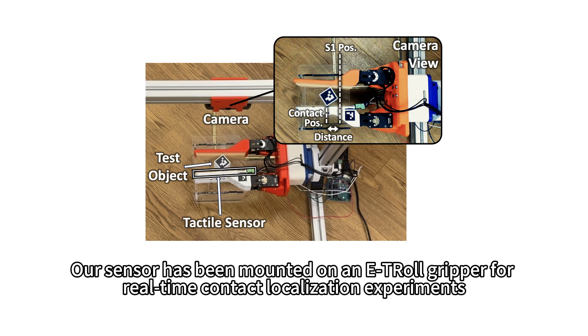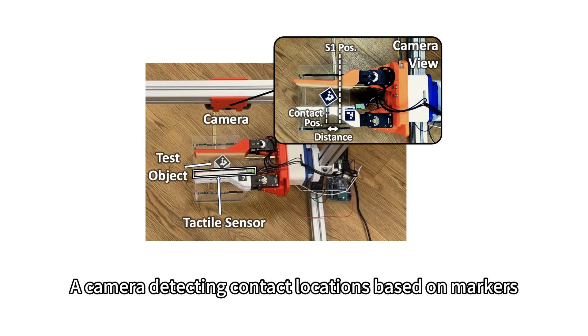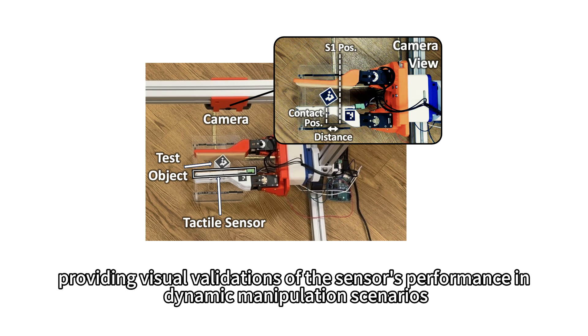Our sensor has been mounted on the ECHO gripper for real-time contact localization experiments. A camera detecting contact locations based on markers provides visual validation of the sensor's performance in dynamic manipulation scenarios.